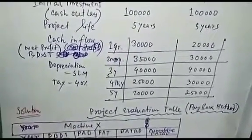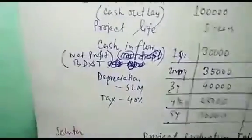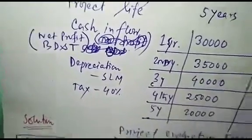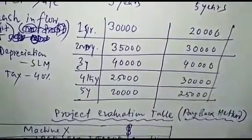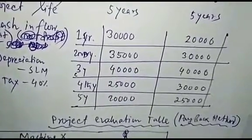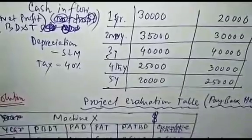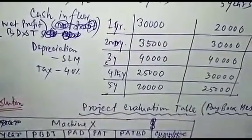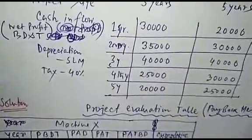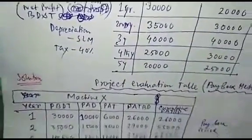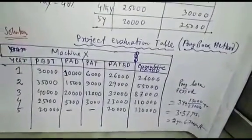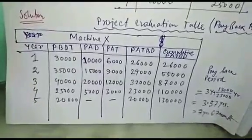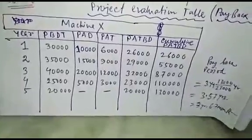The profit is net profit PBDT - before depreciation and tax. This figure is profit before tax. So two things: depreciation and tax. You are investing in fixed assets, so depreciation is important. Now the solution: make a project evaluation table using payback method. Machine X first. Six columns: year 1, 2, 3, 4, 5. PBDT from the question.